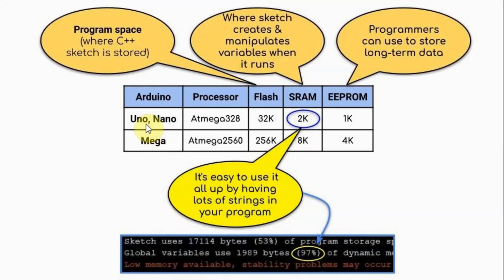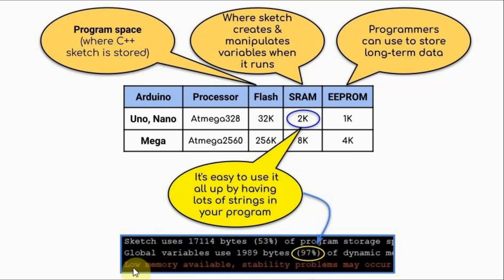One of the limitations of the Uno or the Nano is low static RAM, which is 2KB. We can easily use up this amount of memory if string variables are used. In this example, the compiler indicates that the variables have used up 97% of the 2KB, and thus it issues this warning: low memory available — stability problems may occur.